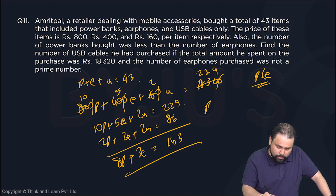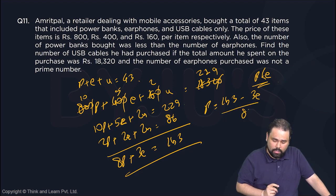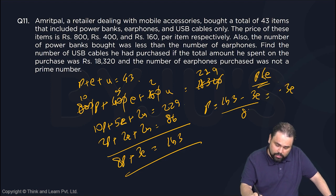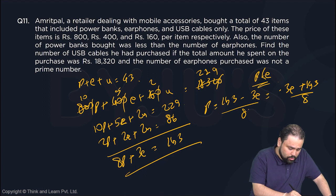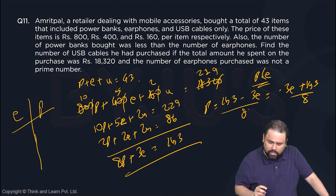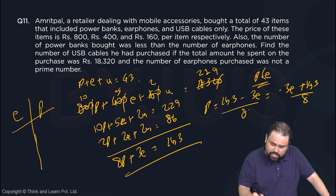From here, P equals 143 minus 3E divided by 8. Or you can say minus 3E plus 143 by 8. So E will change by 8, P will change by minus 3. Let's see what values of E and P we can get which will satisfy this. Testing values to see if they satisfy.